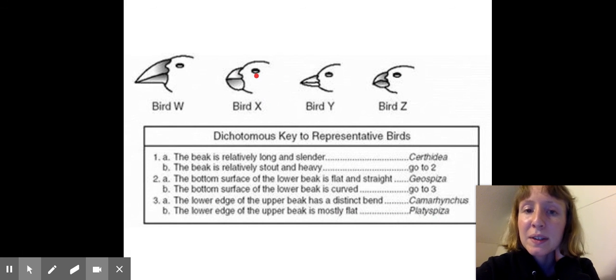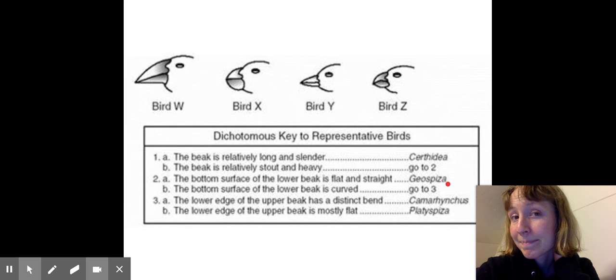Try and figure out birds Z, W, and Y. And I'm already going to tell you that this is stout and heavy. So that was not Cerithidia. Instead, we would go to two. We would see that the lower surface is flat and straight, and that would be geospiza. Try and figure out bird Z for me.